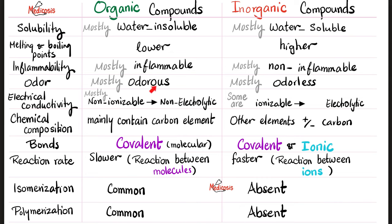Organic compounds have lovely odors — vanilla, cinnamon, and others are indeed organic compounds. That's why aromatic organic compounds are called aromatic — they have distinctive odors. Inorganic compounds are mostly odorless. Electrical conductivity: organic compounds are mostly non-ionizable and therefore non-electrolytic. Inorganic compounds — many are ionizable and therefore electrolytic. Some are more electrolytic than others.